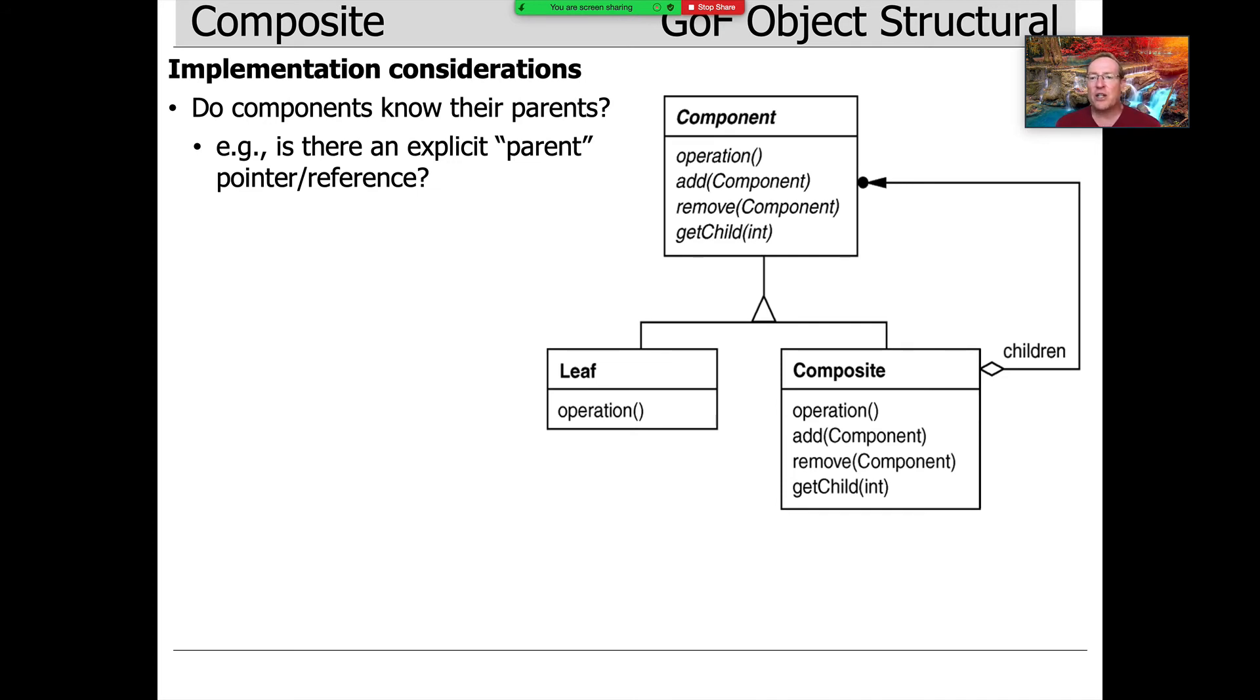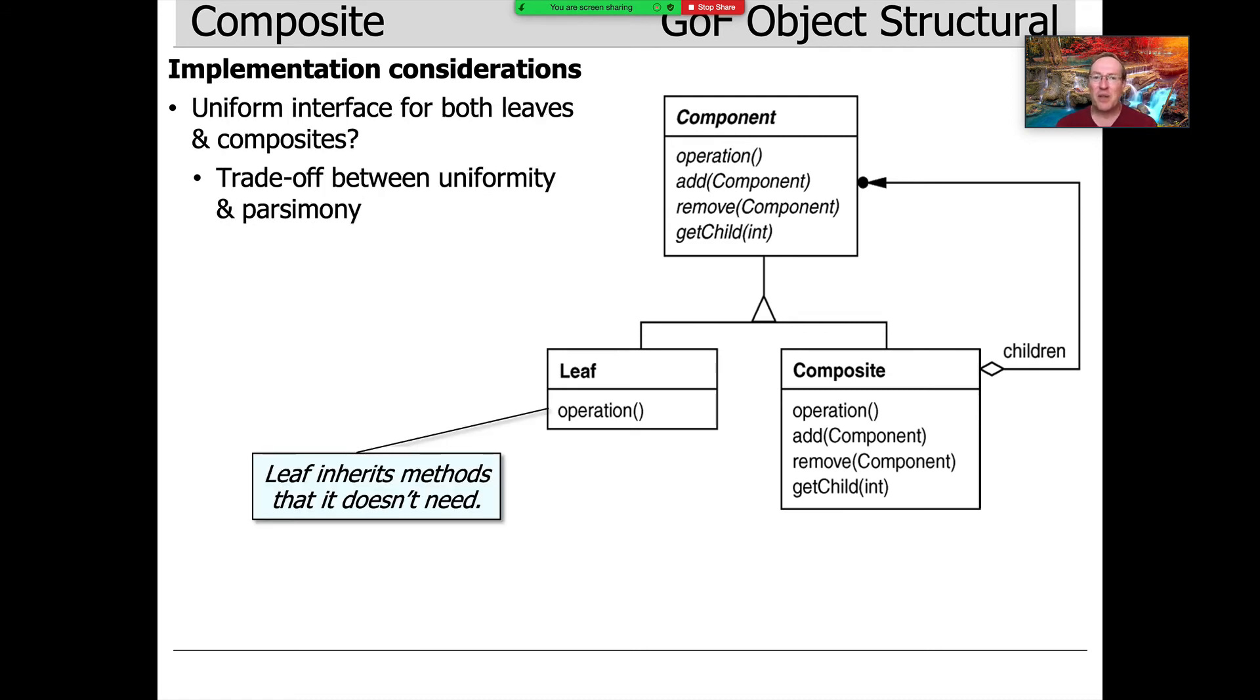There's also a set of implementation considerations. Do components know who their parents are? Is there an explicit parent pointer or reference from a given child back up to its parent? And the real question there is, do we need to go backwards in the tree? If you need to go backwards in the tree, then you probably need to have a back pointer. Another question that we alluded to a moment ago is, do you need to have exactly the same interface for both the leaf nodes and the composites? And the answer is no, but there's a tradeoff there between uniformity and parsimony. If you make things uniform, then you won't be parsimonious because you'll have extra methods that aren't always needed. But if you optimize for parsimony, you won't have uniformity. And you kind of have to decide what's more important to you, parsimony or uniformity.